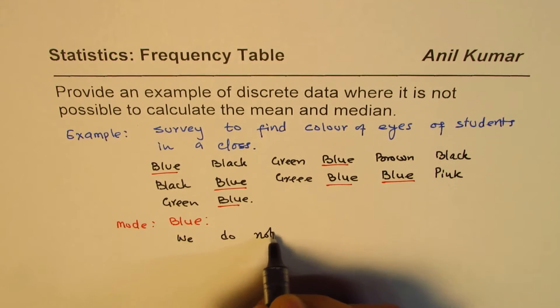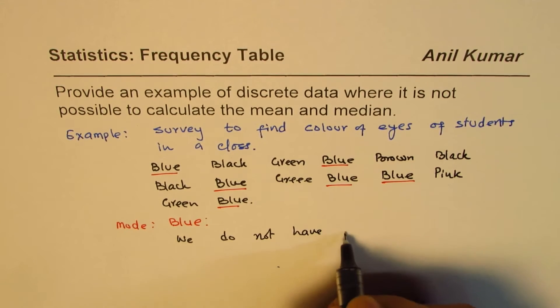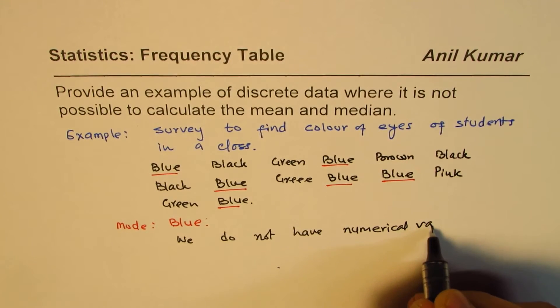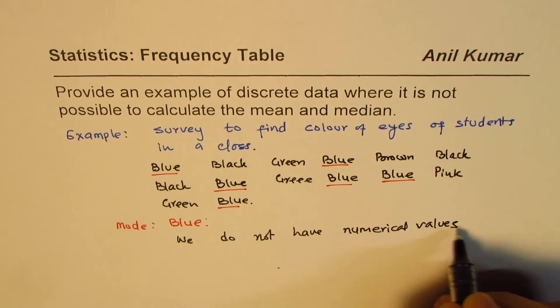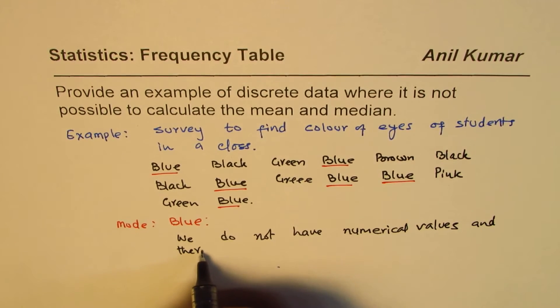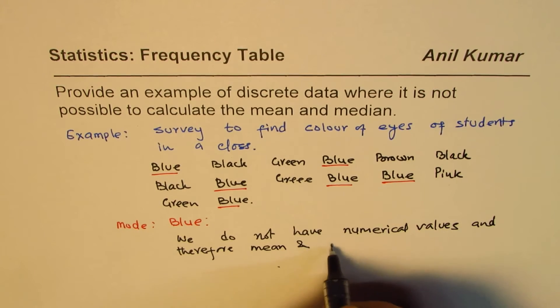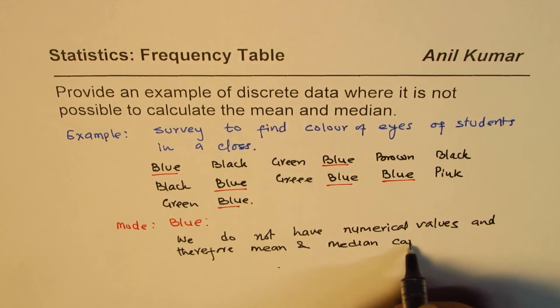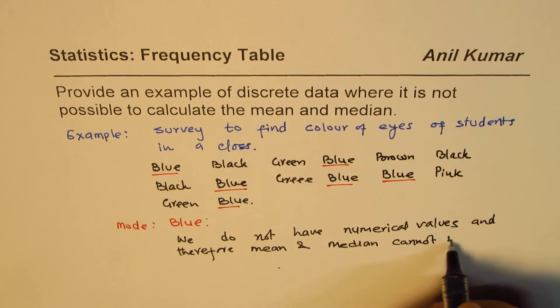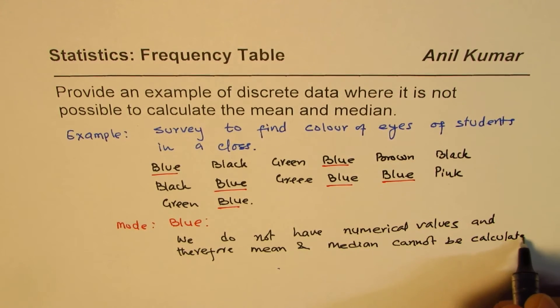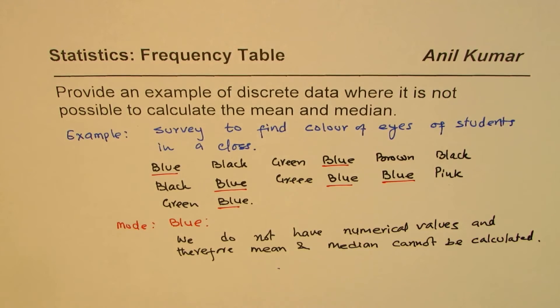So our limitation is we do not have numerical values. And therefore mean and median cannot be calculated.